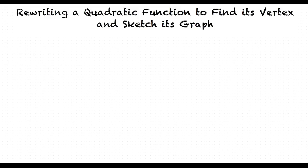This video will cover the topic, rewriting a quadratic function to find its vertex and sketch its graph. Let's start with the example problem: g of x equals negative 2x squared plus 12x minus 19. How would we rewrite this quadratic function in order to find its vertex?